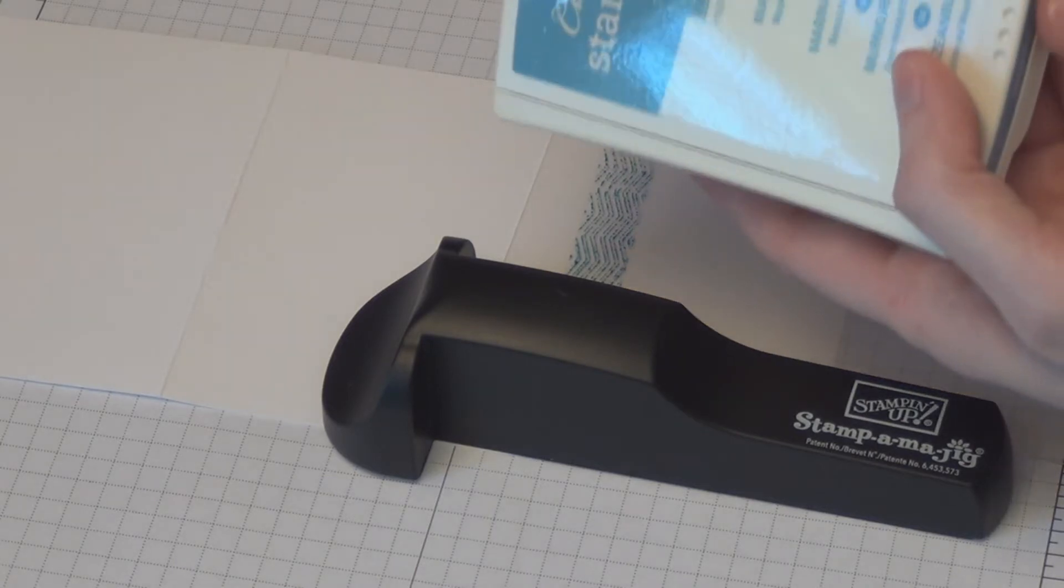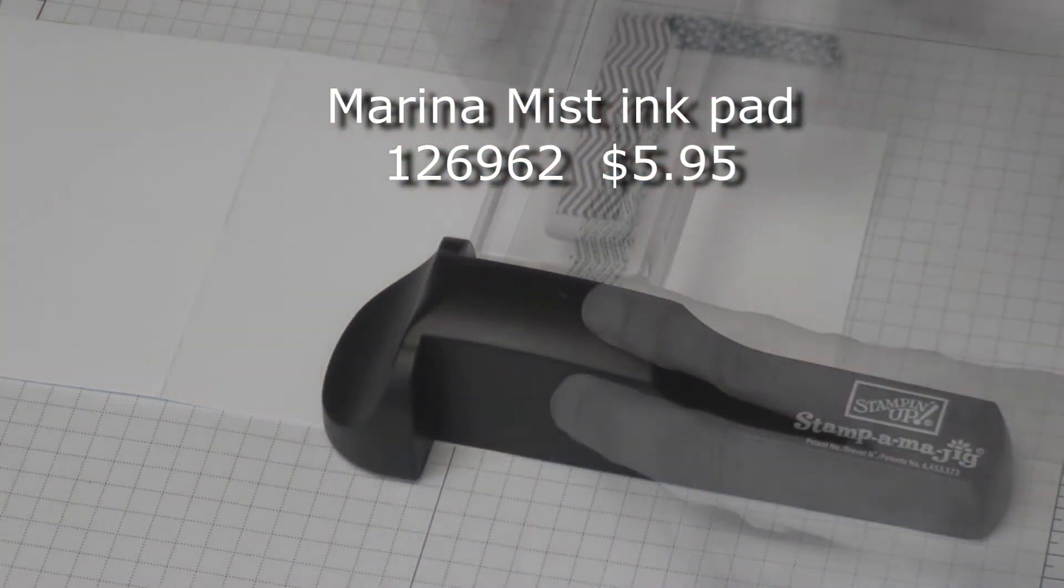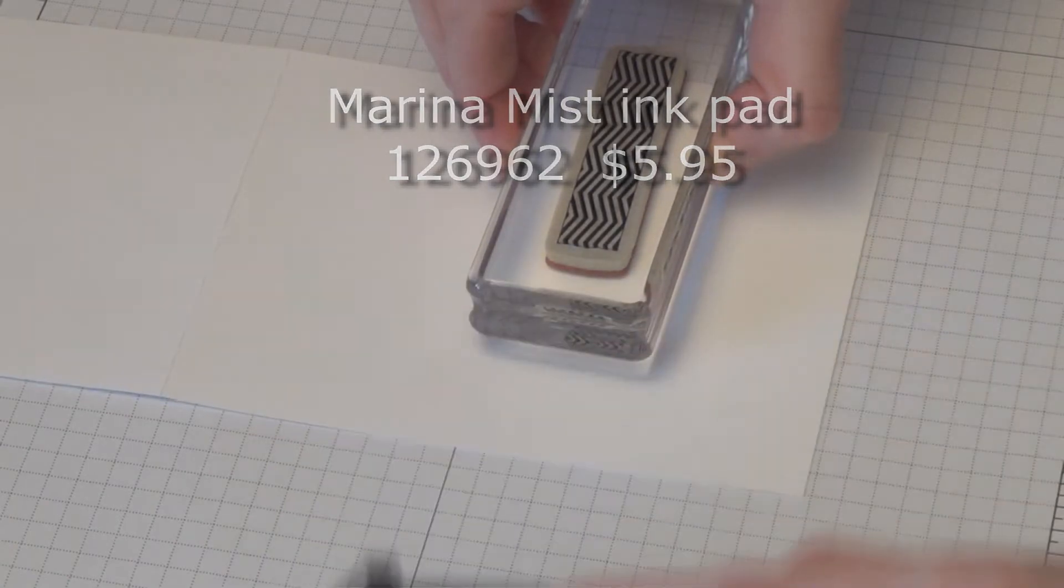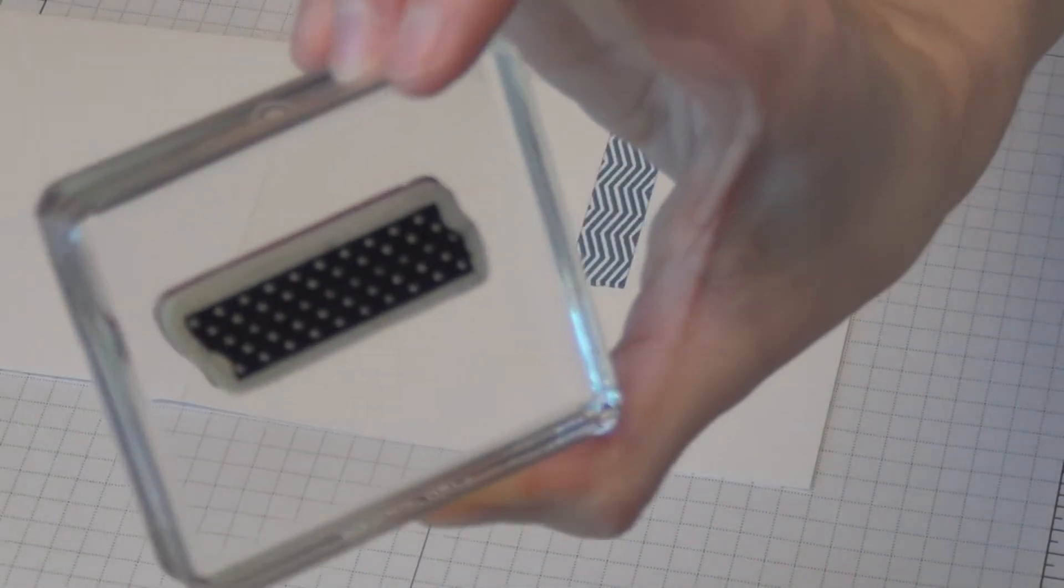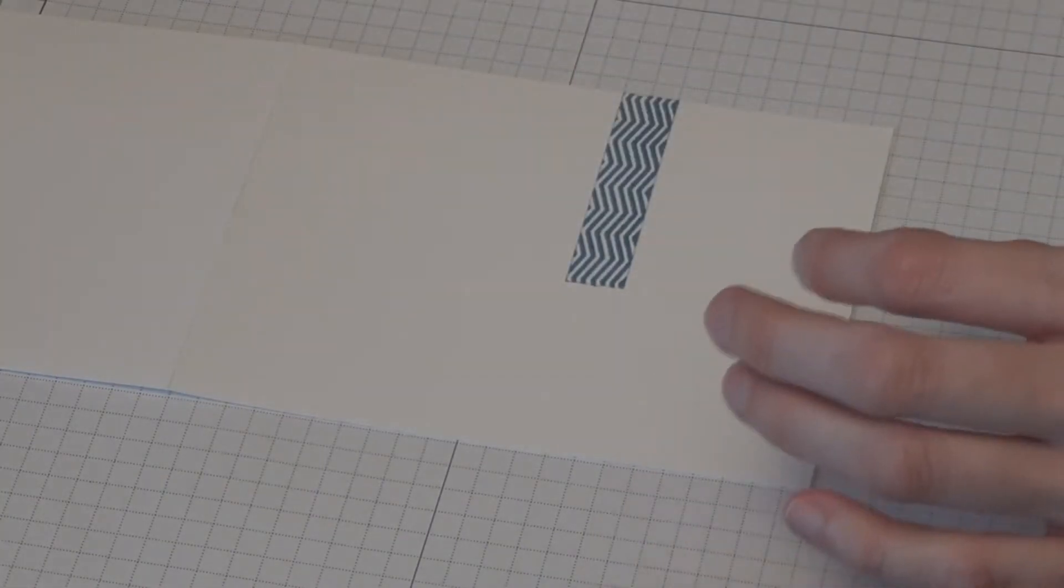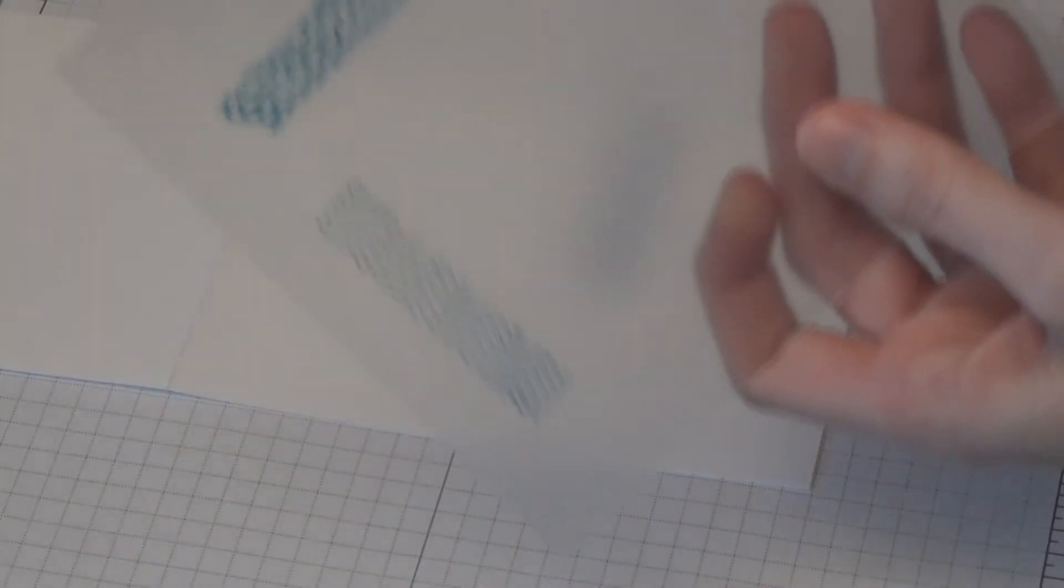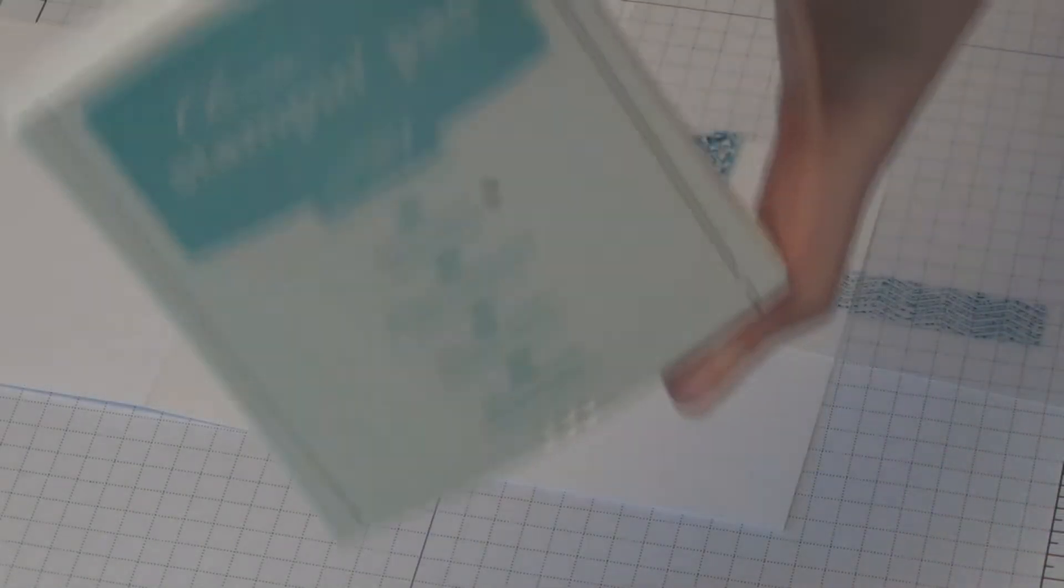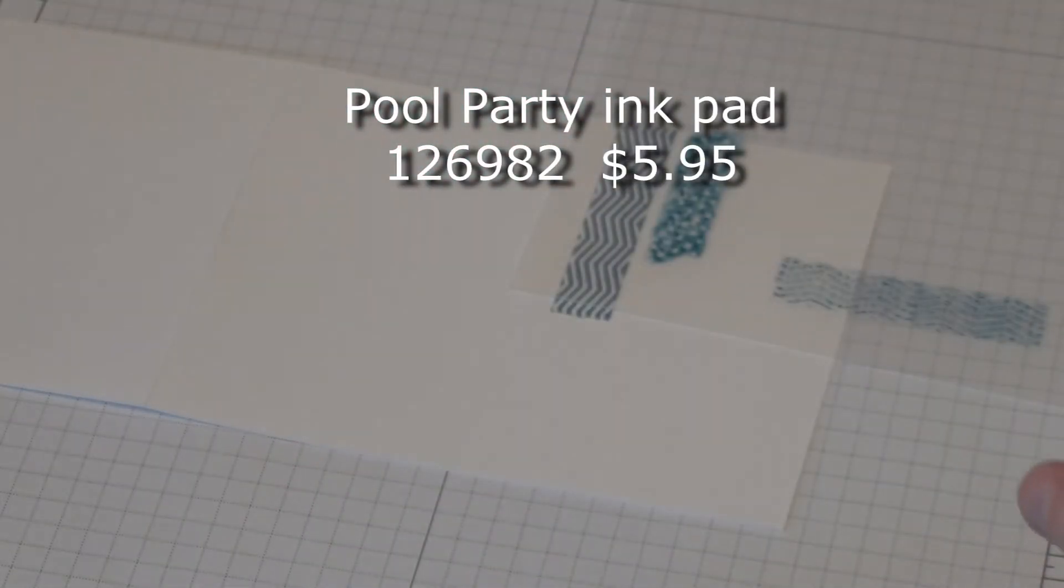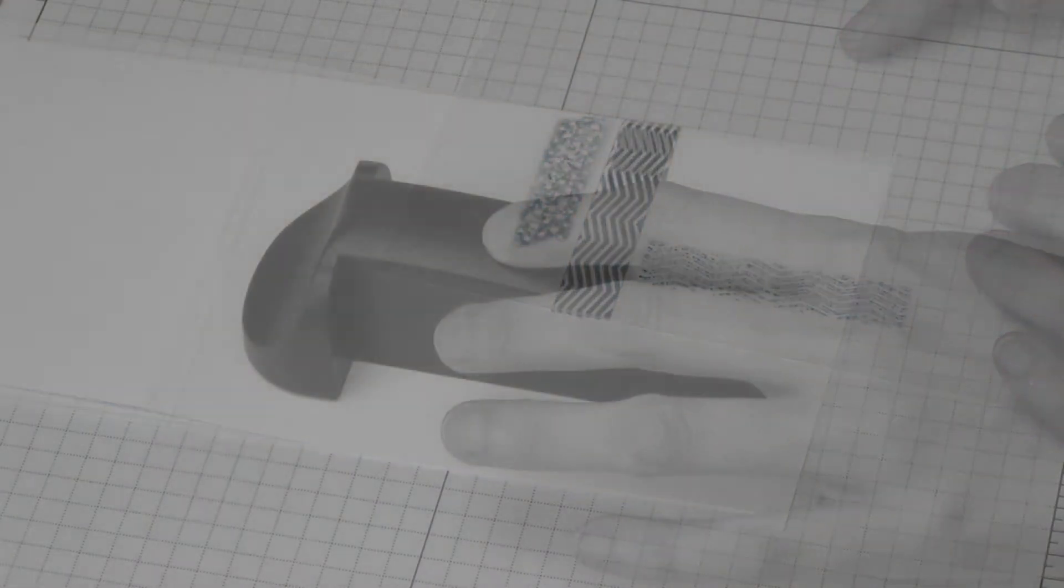I am going to use Marina Mist. I now have the polka dot. I also have it stamped on my Stampin' Majig. I'm going to stamp this one in Pool Party. I'm going to put it at the top.